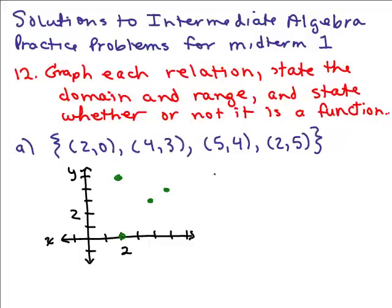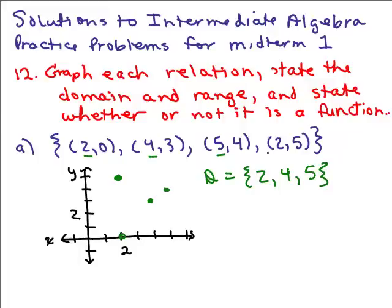It wants to know the domain and the range. The domain is all the x values. You can either look at the graph or the ordered pairs. Looking at the graph, I see x values at 2, 4, and 5. You could also just look at the x coordinates directly, which is easier.